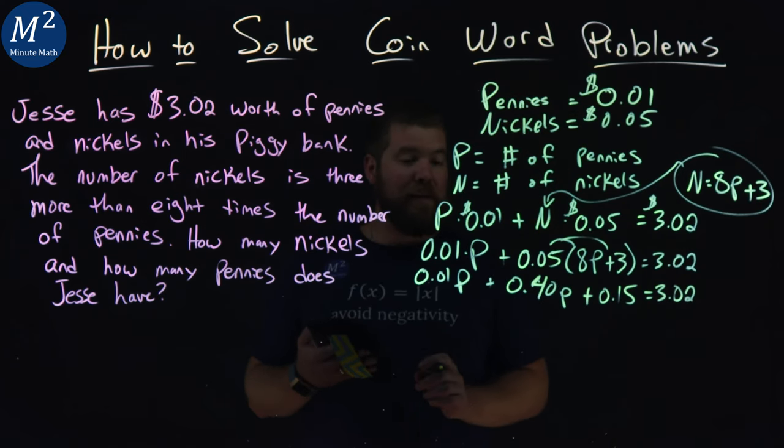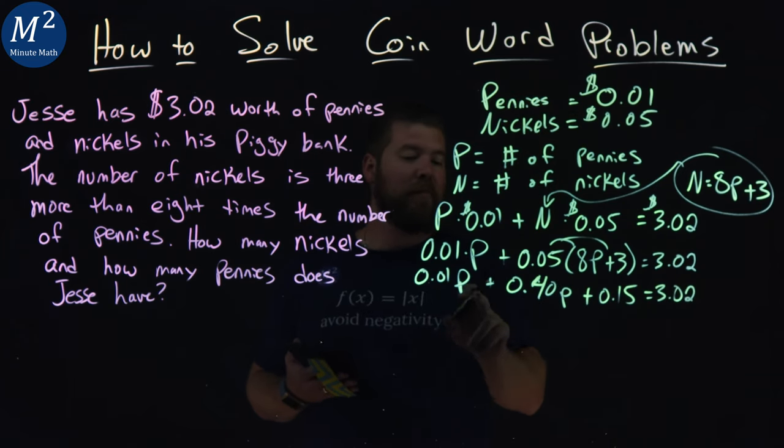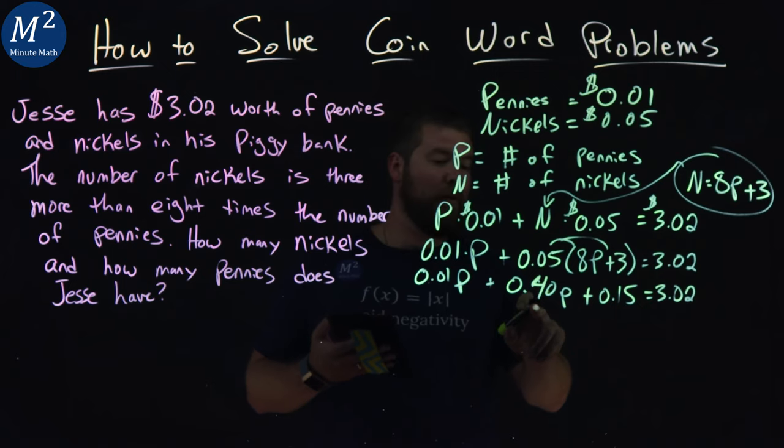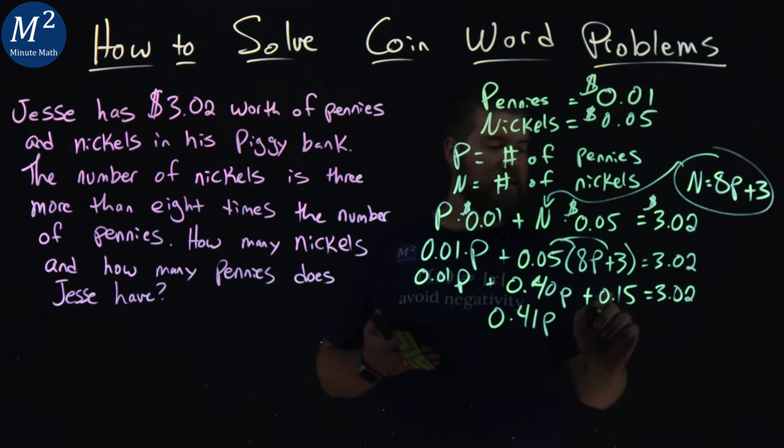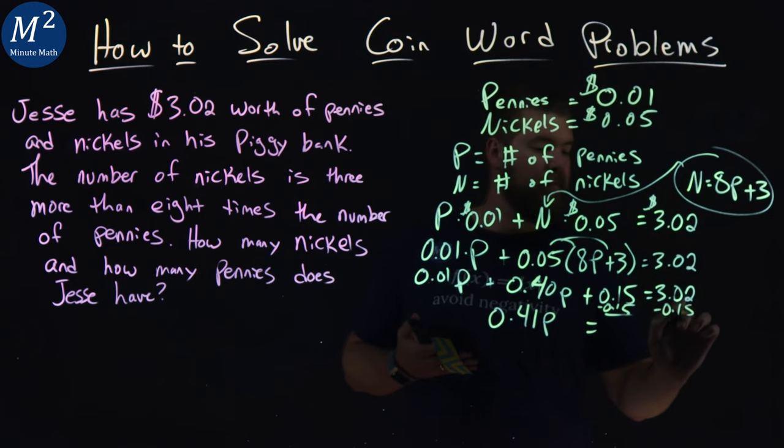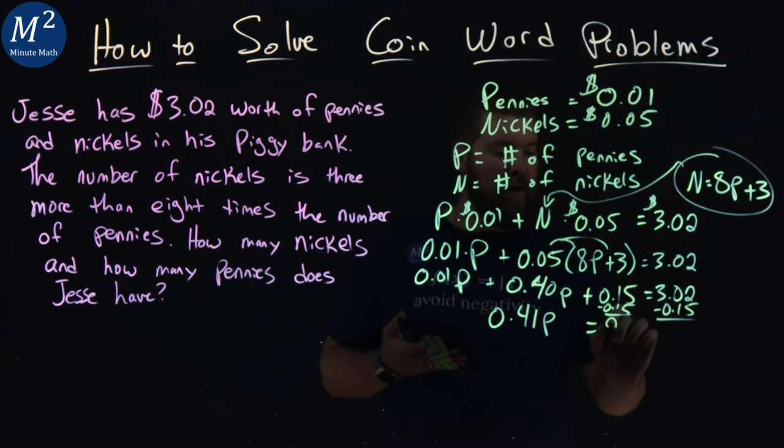We combine like terms: 0.01p and 0.40p is 0.41p. Now subtract 0.15 from both sides, and we get $2.87.